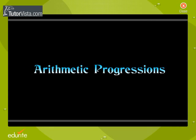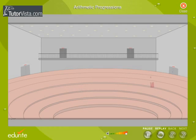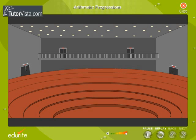Arithmetic Progressions. You can see a part of an auditorium. The first row has 25 seats.